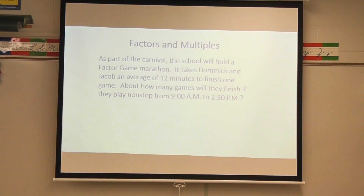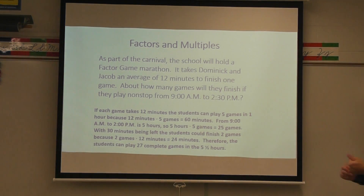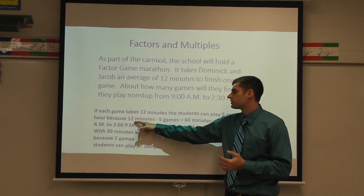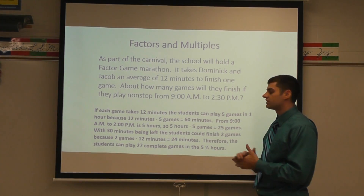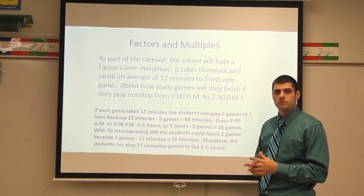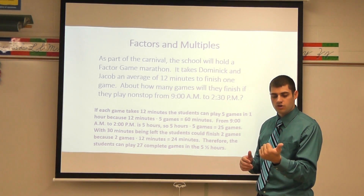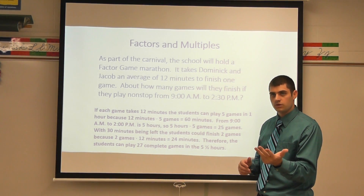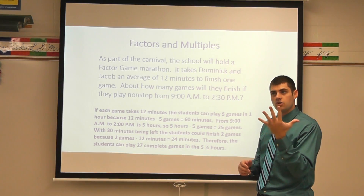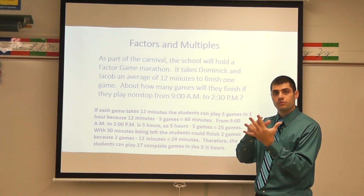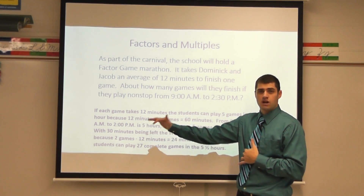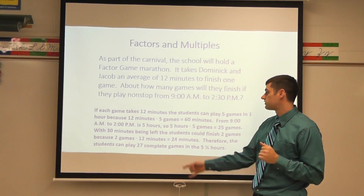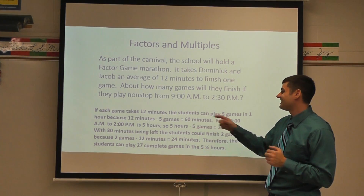In my method, I looked at how it took 12 minutes for one game. If each game takes 12 minutes, the students can play five games in one hour, because 12 minutes times five games equals 60 minutes. You may have used multiples here — one game is 12 minutes, two games is 24 minutes, three games is 36 minutes, four games is 48 minutes, and five games is 60 minutes. I always make sure I write the units in there so I know what each number stands for.